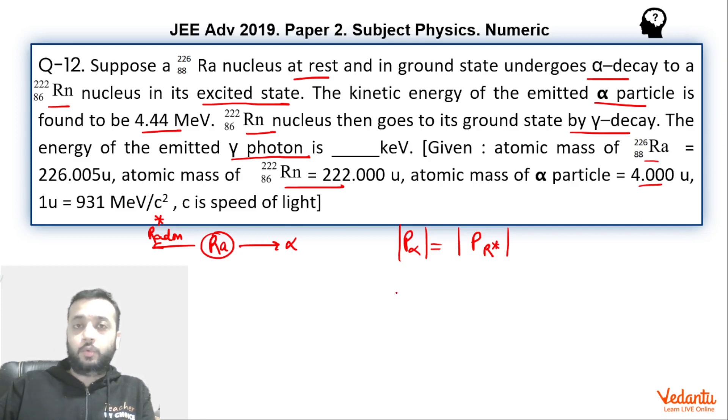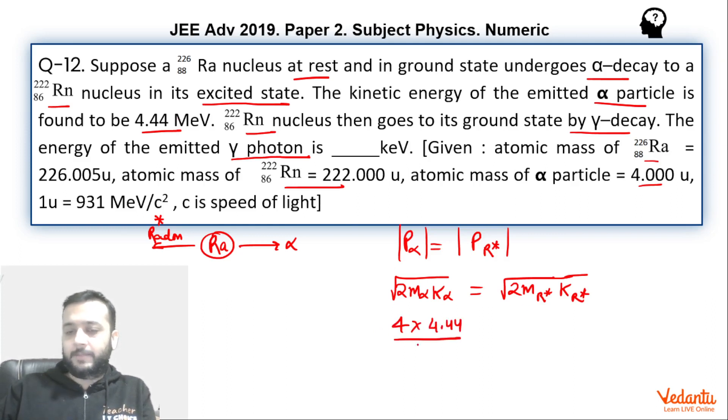So this will become 2 into mass of alpha into kinetic energy of alpha equals to mass of radon into kinetic energy of radon. Okay, so from here we can say that mass of alpha is 4, kinetic energy of alpha is 4.44, divided by mass of radon is 222. So this will be kinetic energy of the emitted radon.